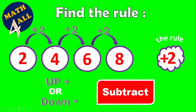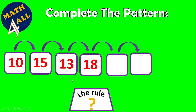So 2, 4, 6, 8 — this is the pattern and plus 2 is the rule. Now the second pattern has a missing number, so you need to find the rule to determine that missing number.